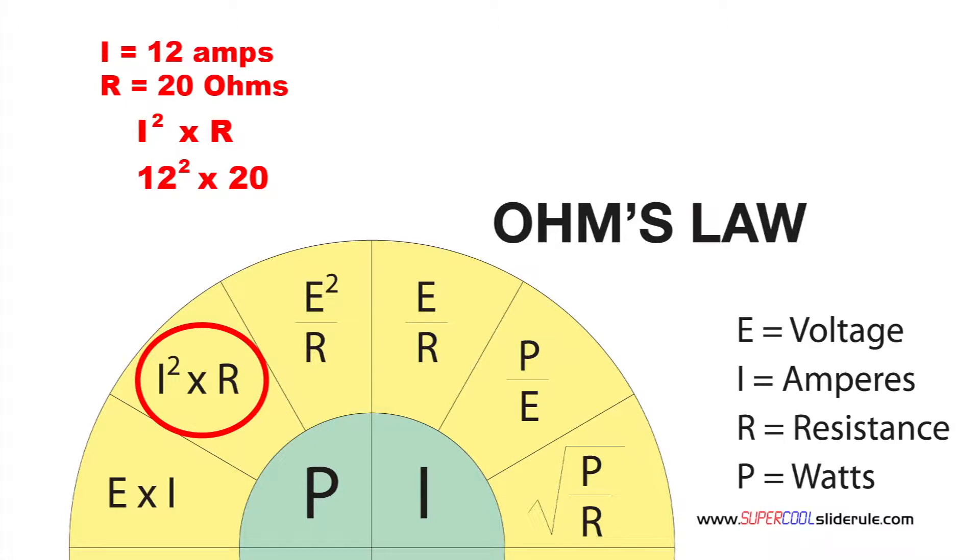Replace the I squared with 12. Remember anything squared just means it is multiplied by itself. So 12 times 12 equals 144.